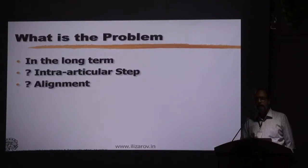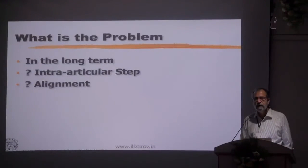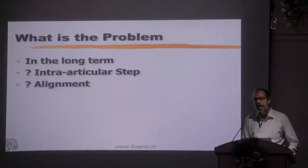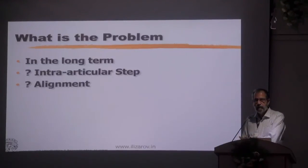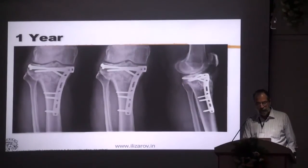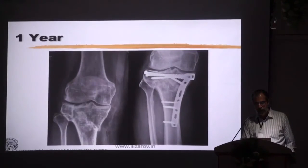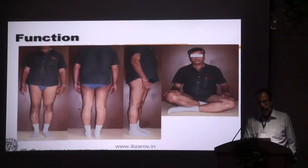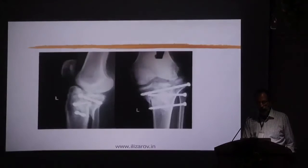When you have fractures with an articular step, you may need an osteotomy on the lateral side in addition to align both sides. The question is: is the problem the intra-articular step or the alignment? If you look at the literature, the bigger problem is the lack of alignment. The proximal tibia tends to tolerate relatively significant articular steps much better than, say, the ankle. So if you have an articular step but your alignment is good, the patient may be asymptomatic. This is the post-surgery result at one year — there is improvement in varus with the osteotomy as well as the articular step correction.